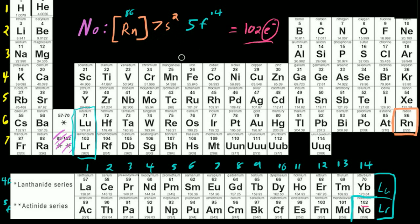I think I'm going to end this video here. In the next video, I'm just going to point out where the exceptions are on our F block, just so you can see which elements down here are going to be exceptions from any rule we can generalize about how we would fill up these electron orbitals. So I will see you in a future video. Thanks for watching.